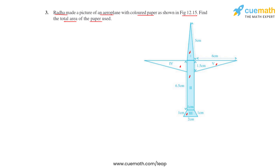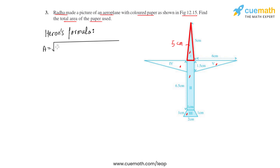We will start by finding the area of region 1, which is triangular in shape with side lengths 5 centimeters, 5 centimeters and 1 centimeter. To find its area we make use of Heron's formula. We are using Heron's formula because the height for the triangular region is not given. The formula is: Area = √(S × (S−A) × (S−B) × (S−C)), where S is the semi-perimeter and A, B, C are the three side lengths of the triangle.